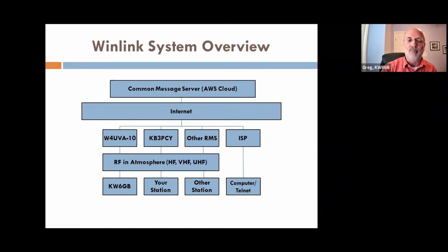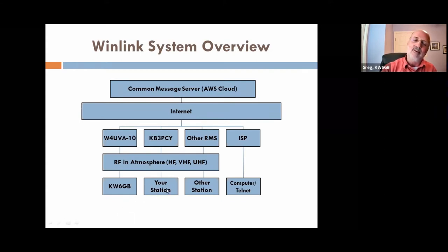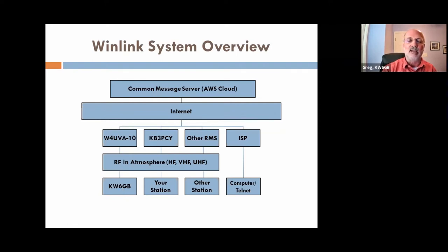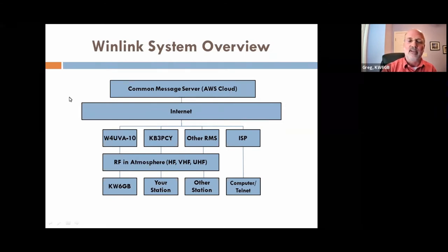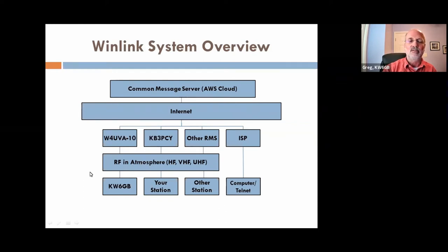In peer-to-peer mode, we can basically eliminate all outside infrastructure. If I want to send a peer-to-peer message, I compose the message and start a peer-to-peer session. This is one of those instances where the recipient has to be on the air at the same time as me. The message goes out RF in the atmosphere directly to the other station — no CMS, no Internet involved. It eliminates all of that other infrastructure that has the potential for faults, leaving only the two end stations as potential failure points.